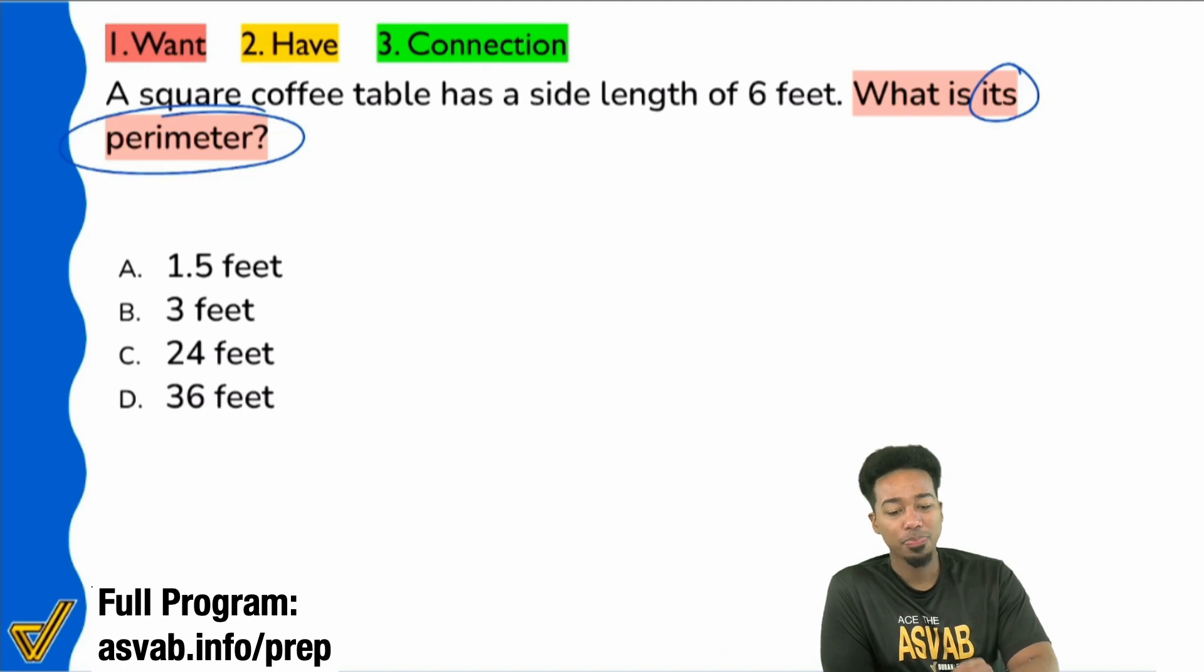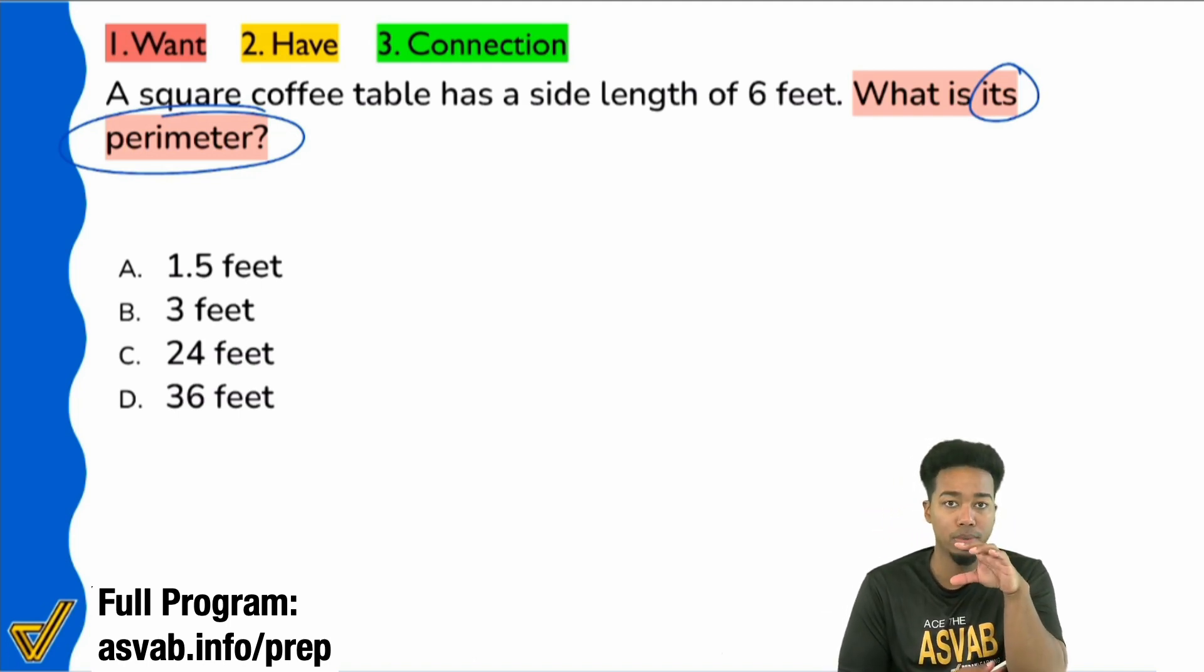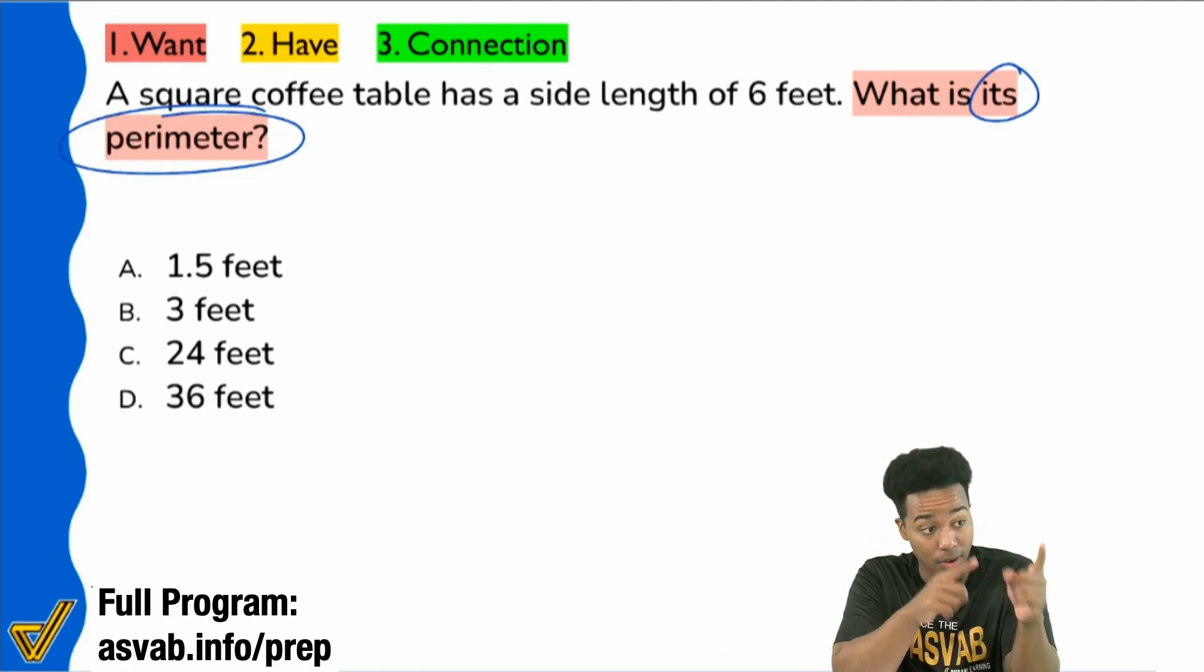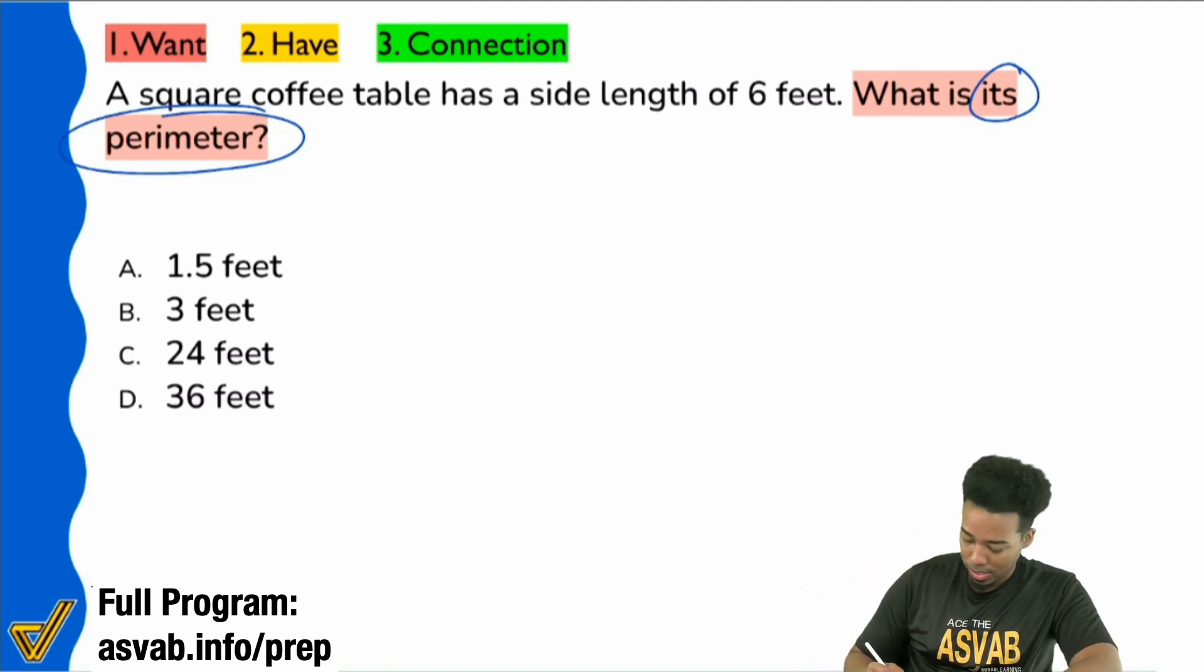Welcome in. So now, the first thing you want to do, the main advantage that you have with geometry word problems is that there are formulas involved. So the first thing you read for the question itself was perimeter, or looking for perimeter. Now the next thing you want to ask yourself immediately is, if I want to know what formula, I need to know what shape. Because if I know the shape and I know what I'm trying to figure out, there's a formula to it. In the beginning of the problem, it clearly states that we're dealing with a square coffee table.